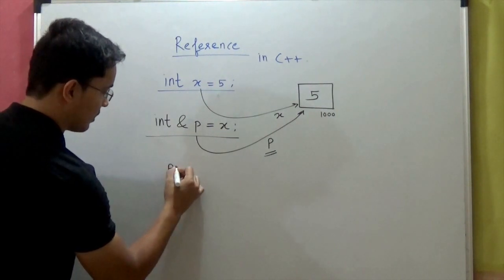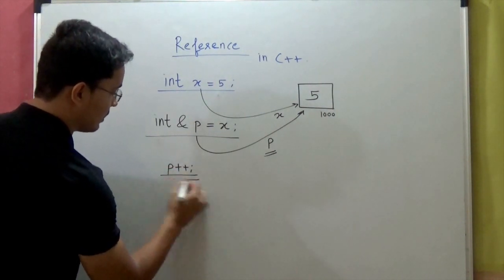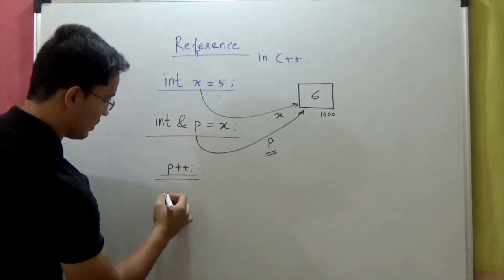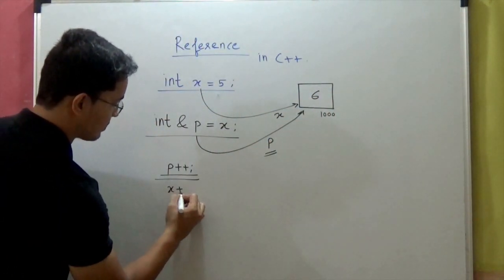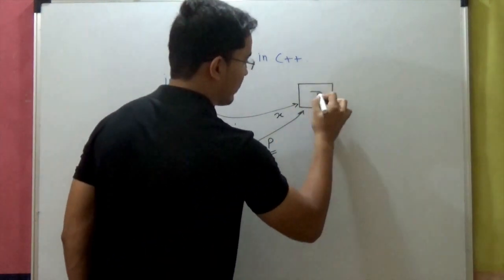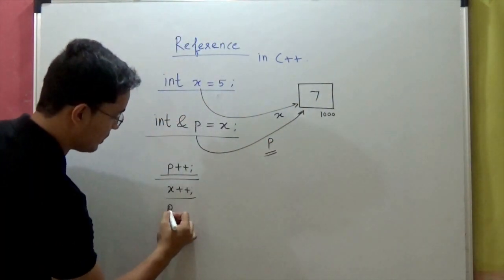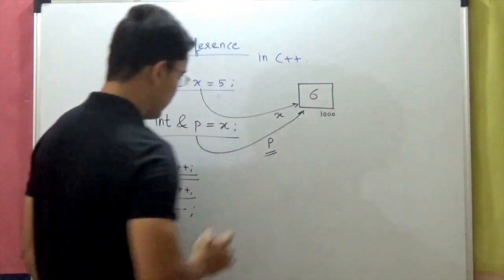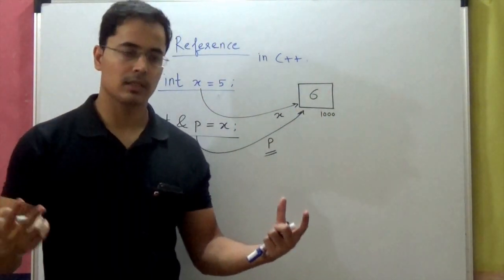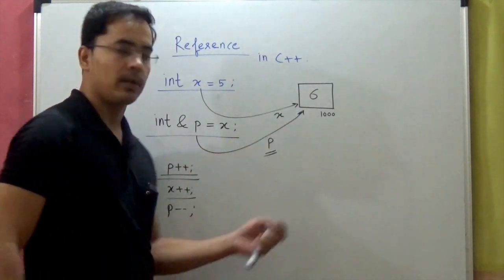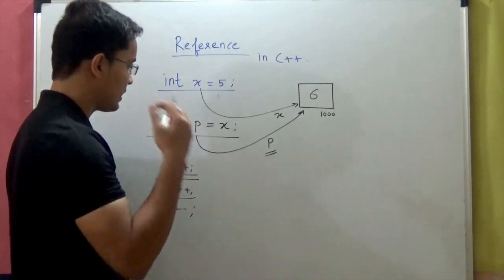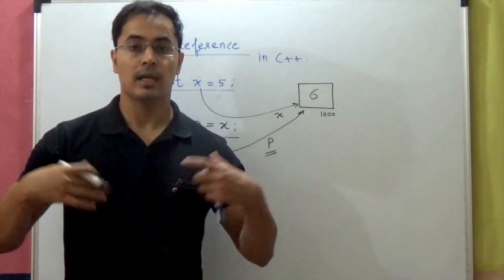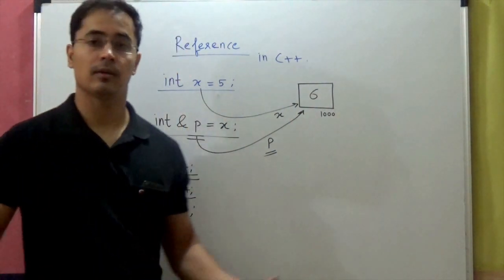So if you say p++, this value will become 6. Then in the next step you say x++, this value will become 7. Then in the next step you say p--, this value will again become 6. So you now have two ways to manipulate this memory location. Reference is nothing but an alias created for an existing variable.